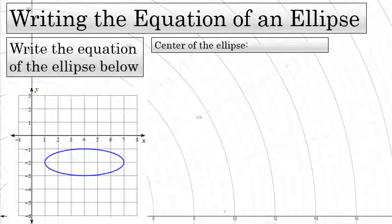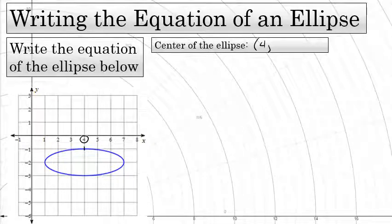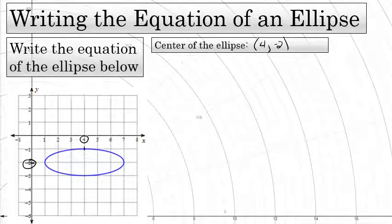First, the center. The center of this ellipse horizontally from left to right has an x-coordinate of 4, and vertically up and down the center has a y-coordinate of negative 2. The center would be located at (4, -2).